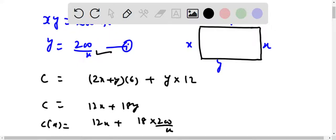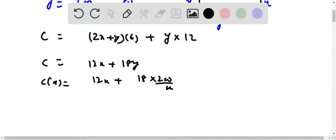So C prime of X should be equal to 0 for critical points. So 12 minus 18 into 200 by X square should be equal to 0. That means X should be equal to 18 into 200 by 12, all under the square root.